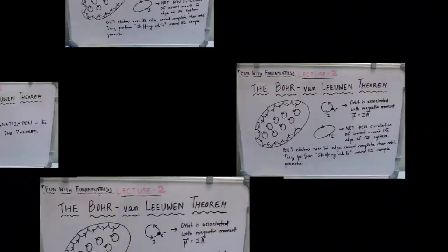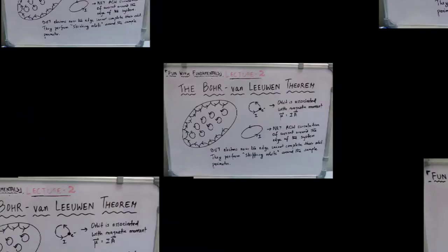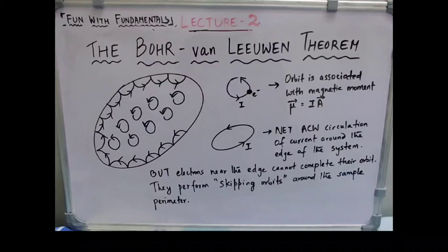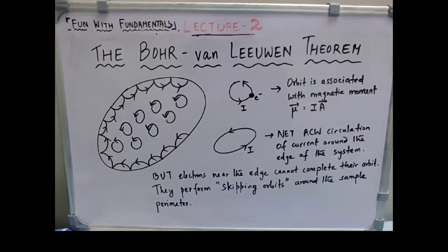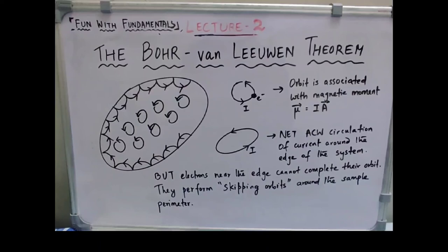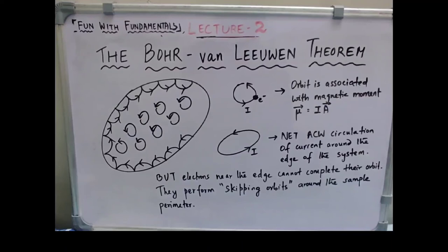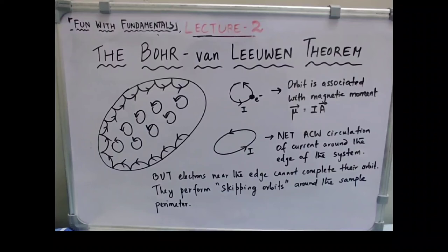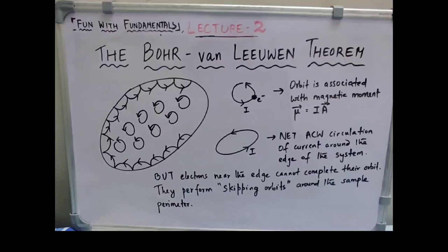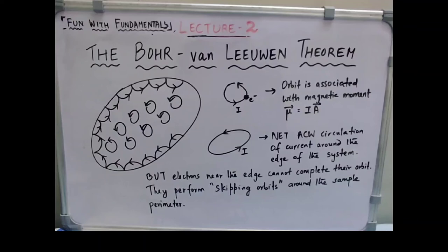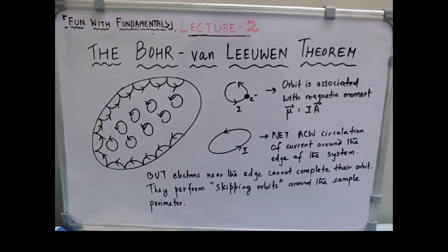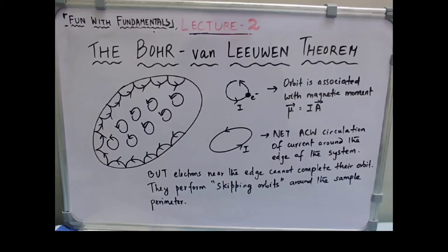This is the gist of the Bohr-van Leeuwen theorem. Consider a material shown by the big circle, kept in an applied field B. The electrons perform cyclotron orbits due to the applied magnetic field. Electrons well inside the material can complete their loop and give rise to a magnetic moment mu equal to current times the area of the loop. However, electrons close to the boundary cannot complete their loop and perform what is known as a skipping orbit. The net anti-clockwise current due to bulk electrons cancels the net clockwise current due to boundary electrons, so the resultant current is zero and there is no net magnetization.